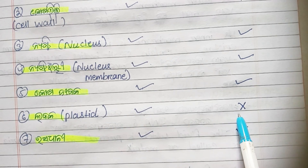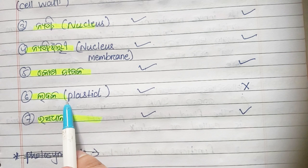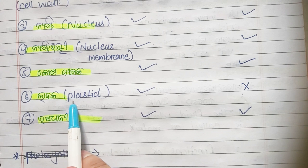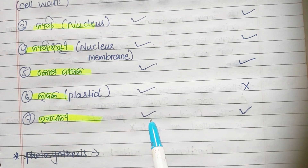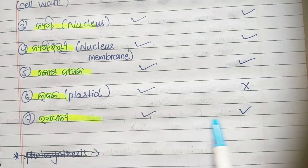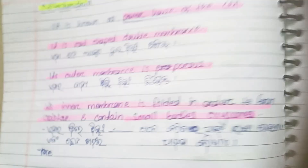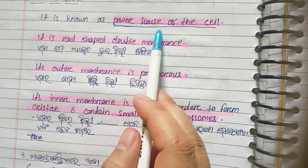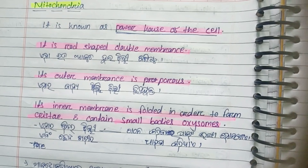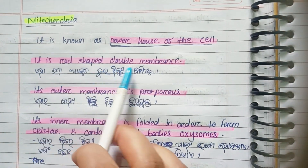So we have seen leucoplasts, chloroplasts, and chromoplasts. Moving to our next topic: mitochondria. Mitochondria is known as the powerhouse of the cell. It is rod-shaped with a double membrane.